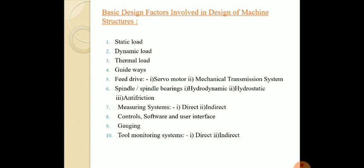There are totally ten factors which are used to design the structure. First one is the static load, the dynamic load, the thermal load, the guideways, the feed drives which include servo motor and mechanical transmission system. Next is the spindle bearing, which has three types: hydrodynamic bearing, hydrostatic bearing, and antifriction bearing. Next is the measuring system: direct and indirect. Eighth is the controls, software, and user interface. Ninth is gauging, and last is the tool monitoring system, direct and indirect.